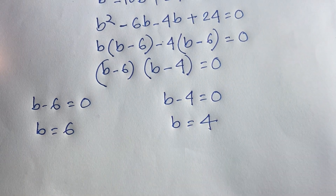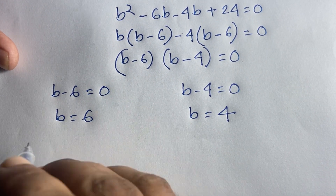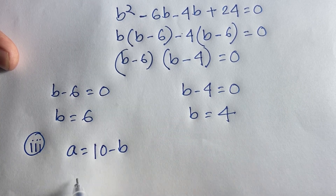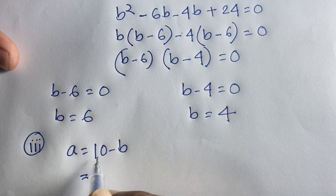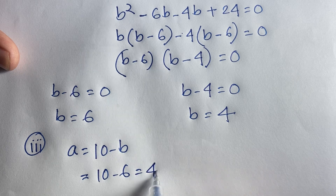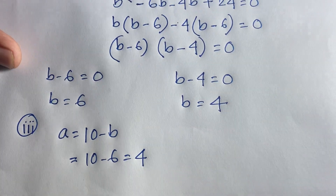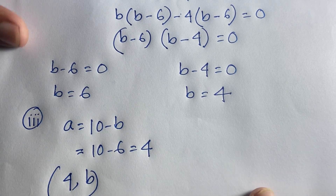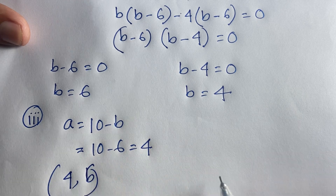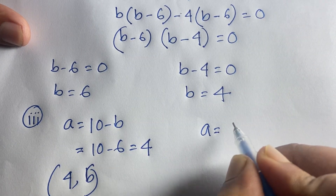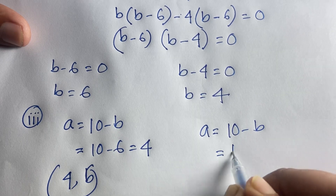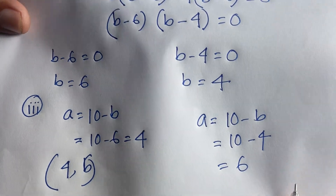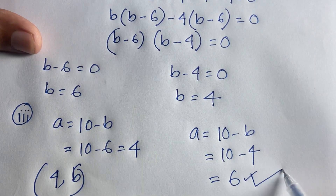Now we find the value of a using our third equation: a is equal to 10 minus b. When b is equal to 6, a is equal to 10 minus 6, which is 4. So our first answer is a is 4 and b is 6. For the other answer, when b is equal to 4, a is equal to 10 minus 4, which is 6. So our second answer is a is 6 and b is 4.